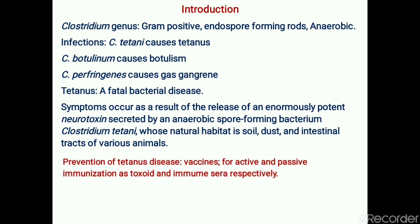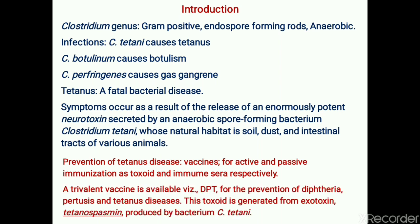The prevention methods for tetanus disease are through active and passive immunization. Vaccines are available for both: for active immunization it is toxoid, and for passive immunization it is immunoserum. A trivalent vaccine called DPT — which stands for Diphtheria, Pertussis, and Tetanus — is responsible for prevention of these three diseases.